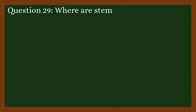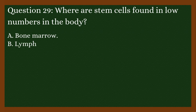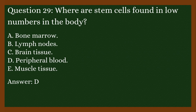Question 29: Where are stem cells found in low numbers in the body? A. Bone marrow. B. Lymph nodes. C. Brain tissue. D. Peripheral blood. E. Muscle tissue. Answer is D. Peripheral blood.